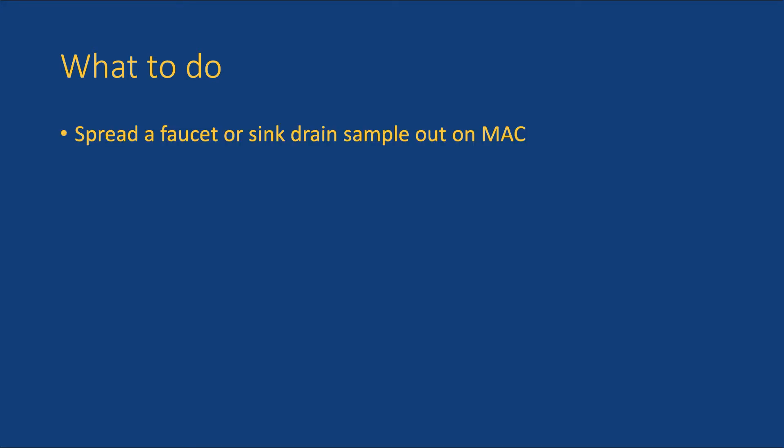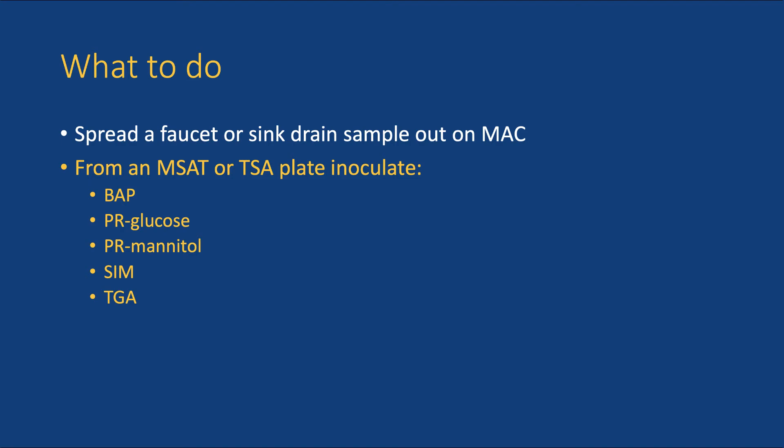That was a lot of information. You can start right away with the MAC plate by spreading a faucet or sink sample out on MAC. If you have not done so already, you should also prepare a fresh MSAT plate, or if you're out of MSAT, a TSA plate. From that plate, you can inoculate BAP, PR glucose, PR mannitol, SIM, and TGA. And you can perform the catalase test.